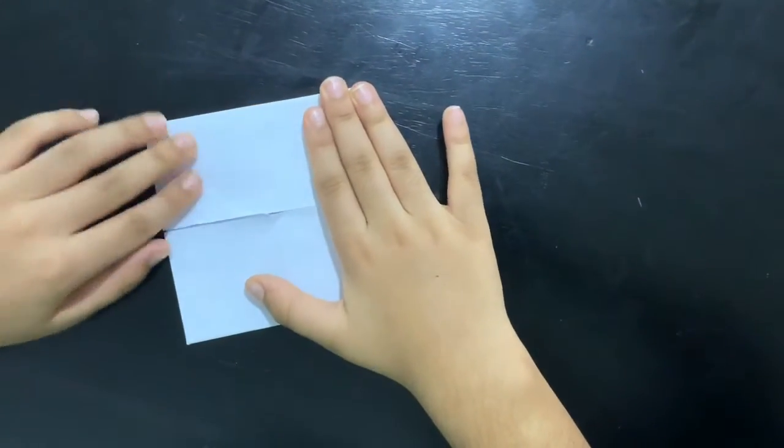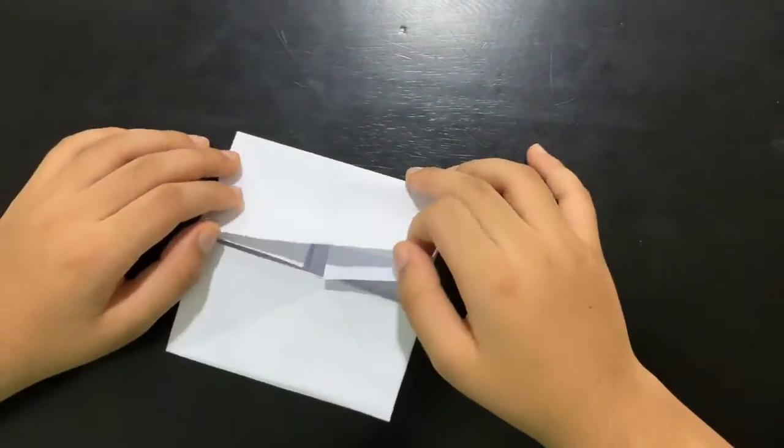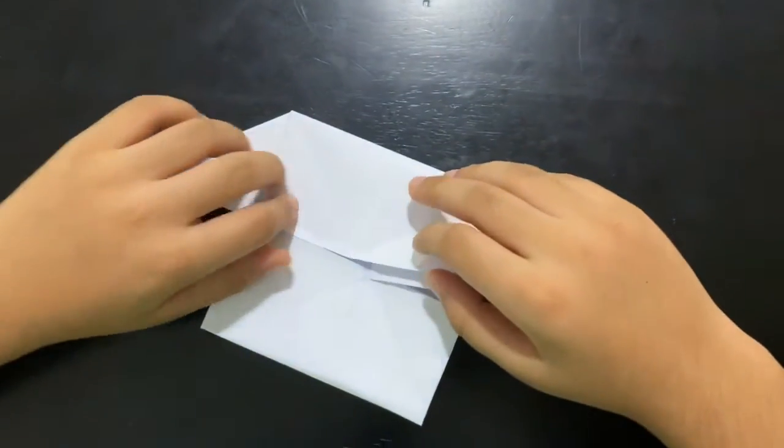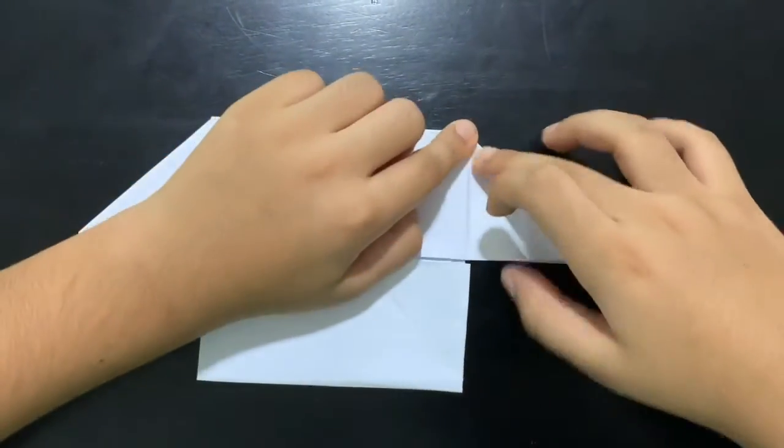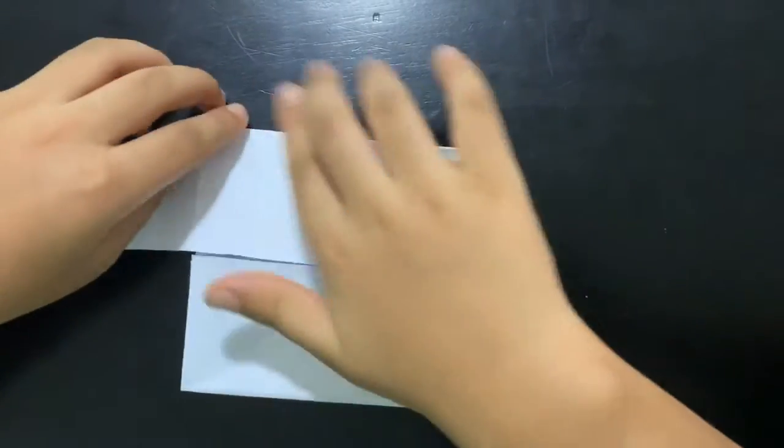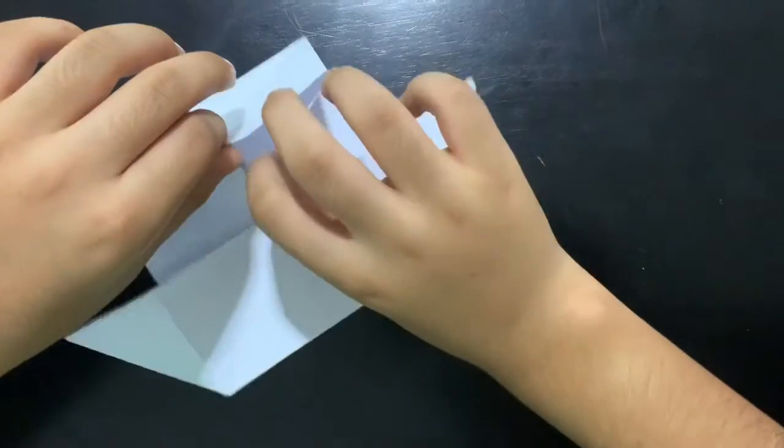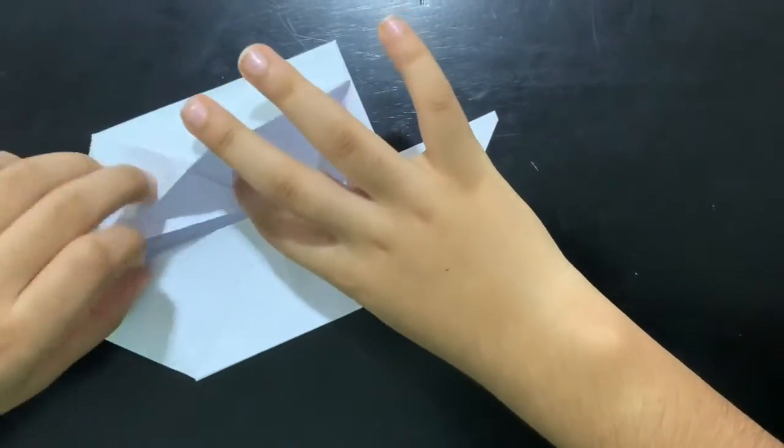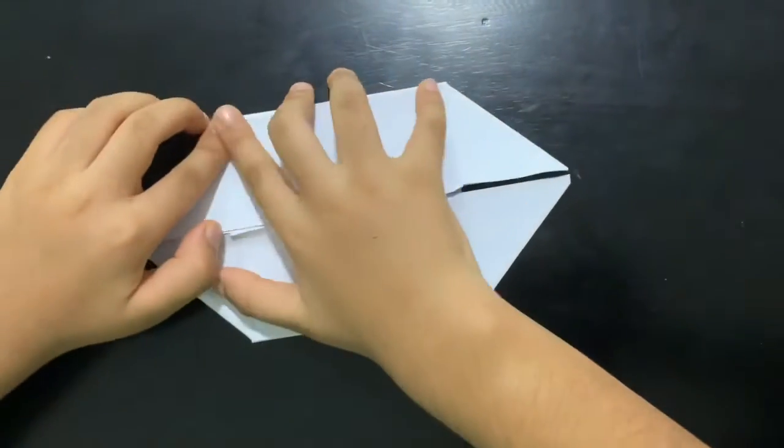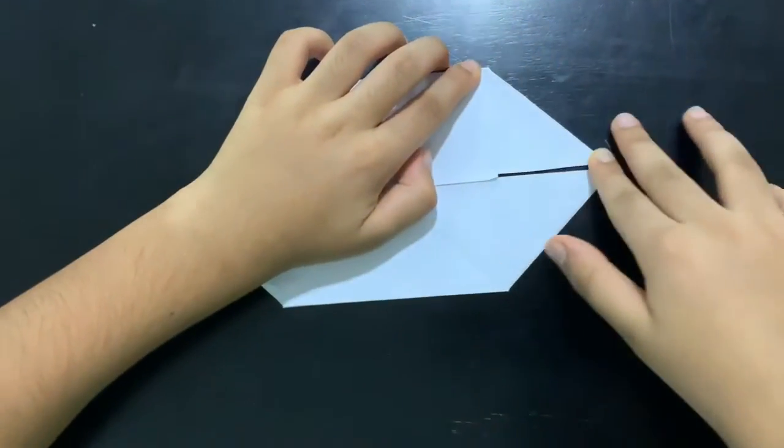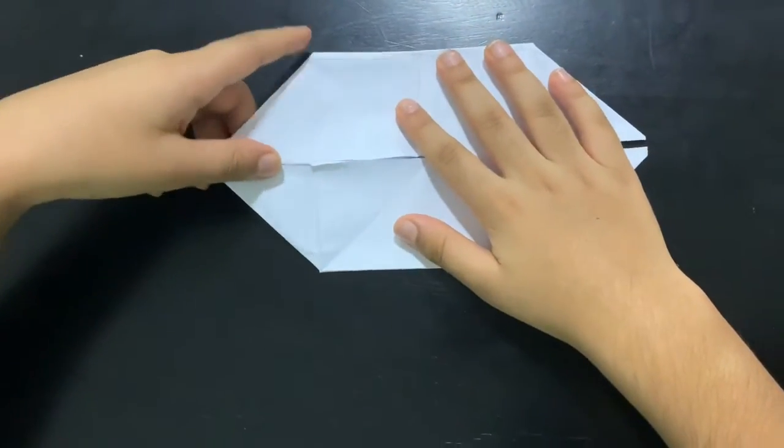Now this step is kind of tricky. So when you have two trapeziums ready, we're ready to go. So now, fold this corner up.